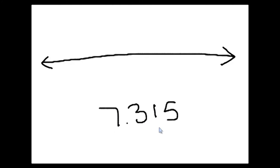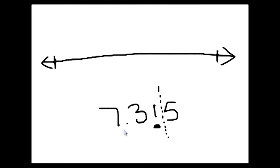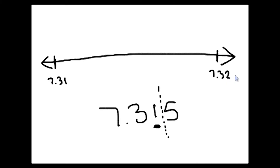This time we're going to round this one to the nearest hundredth — it'll be a little bit trickier. So we need to think which two hundredths seven and three hundred fifteen thousandths is between. You can think about the number stopping here: the lower number is seven and thirty-one hundredths, and the next number is just one hundredth higher — seven and thirty-two hundredths. You can add those little zeros at the end if it helps. The middle will tell us which way our imaginary ball is going to roll — what number is exactly in the middle of three hundred ten thousandths and three hundred twenty thousandths?